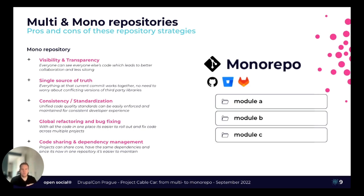Now let's take a look at the mono repository on the other side of the spectrum. It's basically set up to increase visibility and transparency. You're working in one repository together, so you can see everything that's going on from other teams — by nature, it promotes collaboration. You also have a single source of truth: everything in the main branch should work, everybody's working from it, and you're releasing from it as well. Every project or package in that mono repository gets the same version once released. You can set up your code quality standards once, and they run for all projects inside it.